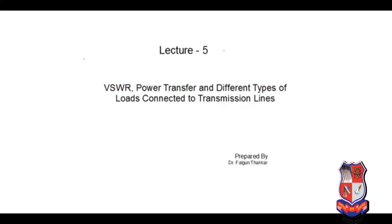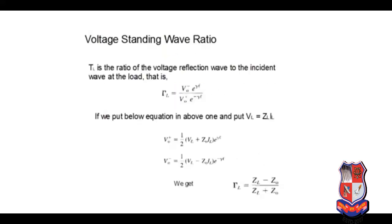If we start with VSWR, then we know the reflection coefficient gamma is defined by the ratio of the voltage reflection wave to the incident wave at the load. Mathematically, the same we can define by the equation V0 minus into E raised to gamma L, upon V0 plus into E raised to minus gamma L. We have already derived the equation for the reflected voltage as well as forward voltage in our last to last lecture.